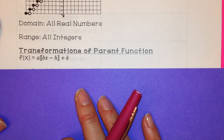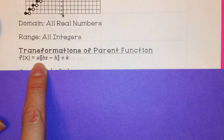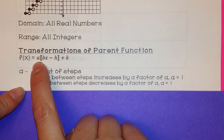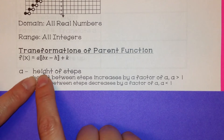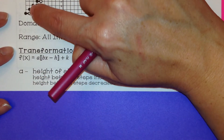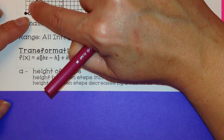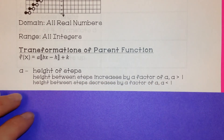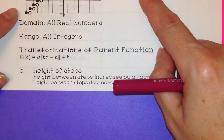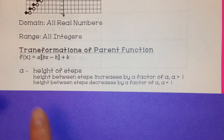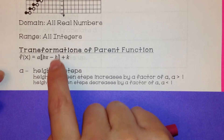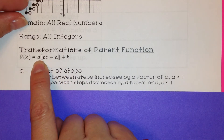Now, transformations of the parent function. We have f(x) equals a times the greatest integer of (bx minus h) plus k. The parameter 'a', the number multiplied outside the greatest integer brackets, represents the height of the step — the distance between the two steps. The height between steps increases by a factor of a if a is greater than 1. If a was 2, the distance between steps would be 2 times normal. The height decreases by a factor of a if a is less than 1, such as one-half.